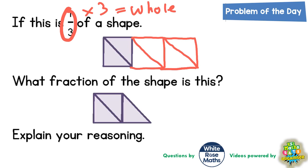So that's what the whole shape would look like. And it's now saying: what fraction of a shape is this underneath here? Well, this is now three triangles — one, two, three triangles.